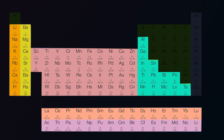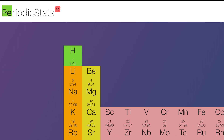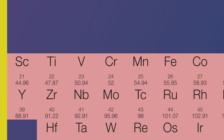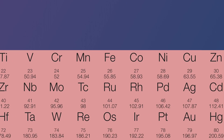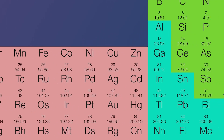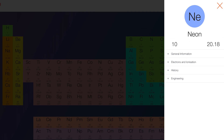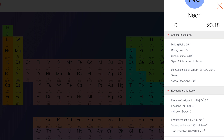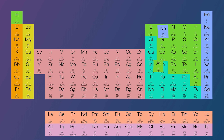I hate to meddle in your life, but you should go to periodstats.com — at least periodically. This table makes learning the elements pretty easy. Click on one and this menu will appear where you can learn its name, general information, electrons and ionization, and engineering. Neat.